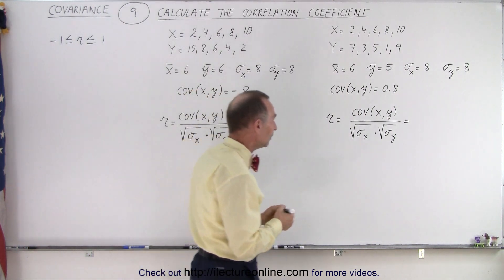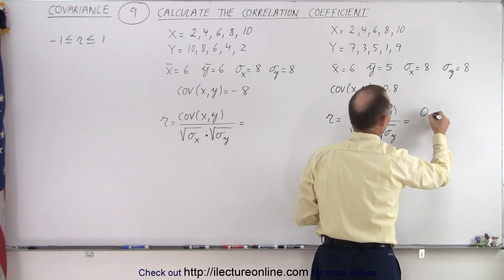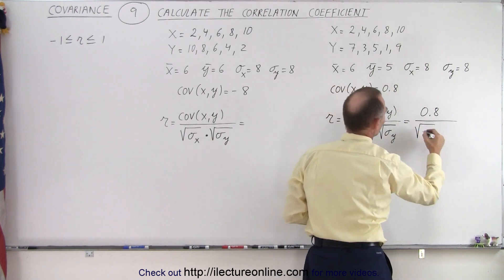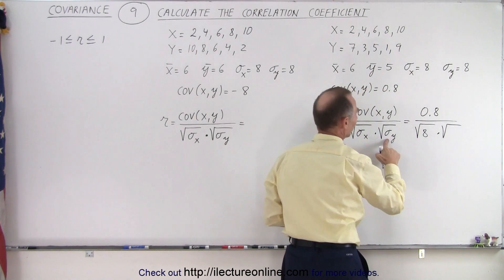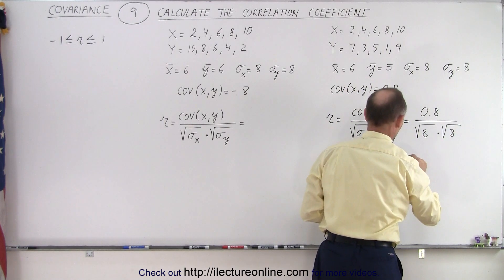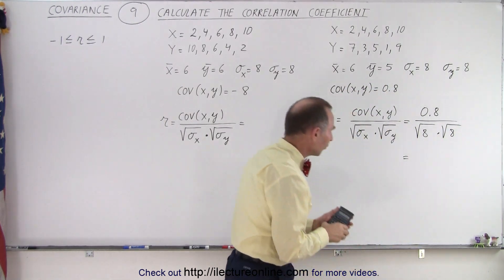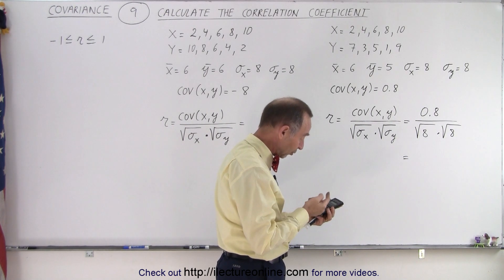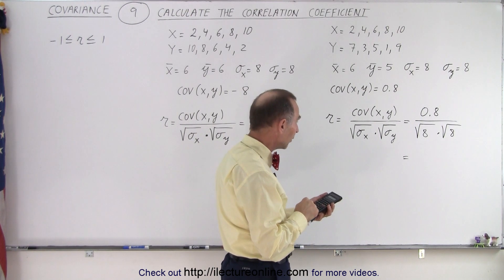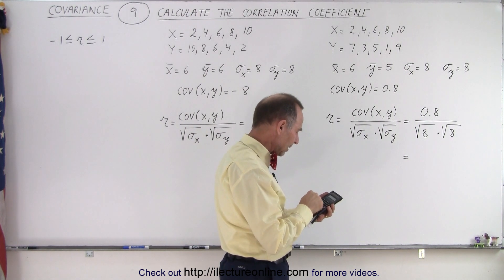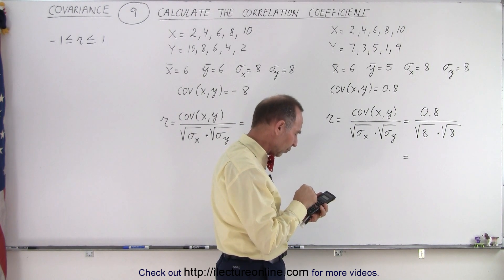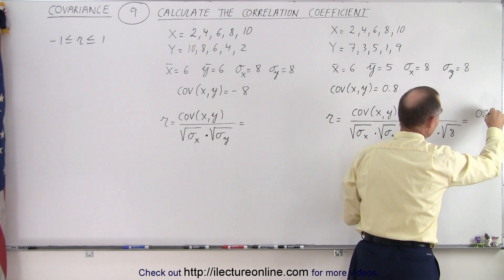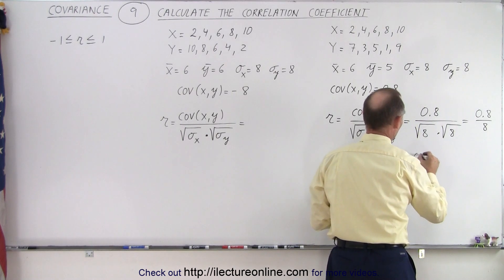Let's go ahead and calculate the first correlation coefficient. We take the covariance, which is 0.8, and divide that by the square root of the variance for X — which is 8 — times the square root of the variance of Y — which is also 8. The square root of 8 times the square root of 8 equals 8, so we get 0.8 divided by 8, which is equal to 0.1.